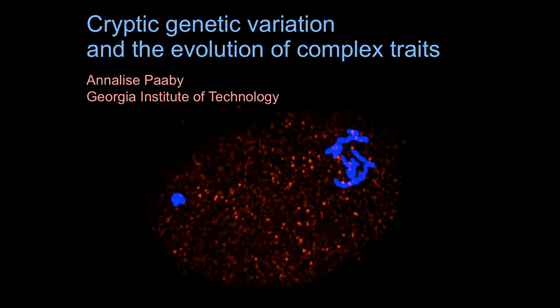Our final talk for the session is Annalise Pabey. Thank you. So thanks to the organizers, and thanks to all of you for sticking around. I'll try and make this snappy. So I want to tell you about a project that began when I was a postdoc with Matt Rockman at New York University and continues now in my new lab at Georgia Tech. In this project, we discovered functional genetic variation in gene networks for embryogenesis in C. elegans.